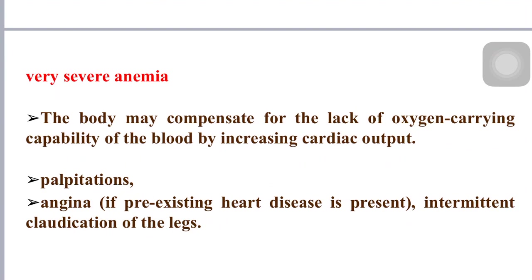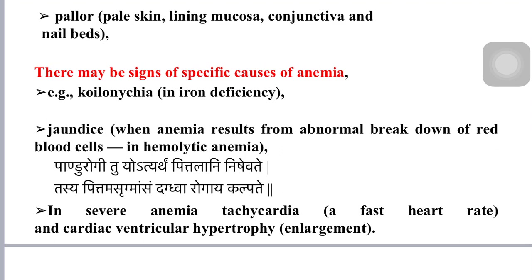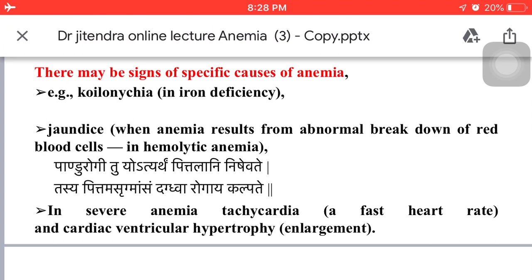Pallor of the skin, lining mucosa, conjunctiva, and nail beds are the main places of observation. There may be signs of a specific cause of anemia — for example, koilonychia in iron deficiency anemia. Jaundice is present when anemia results from abnormal breakdown of red blood cells in hemolytic anemia.